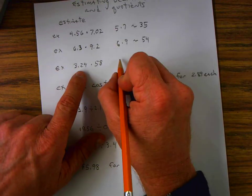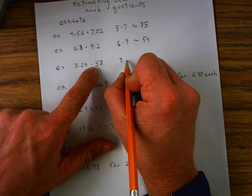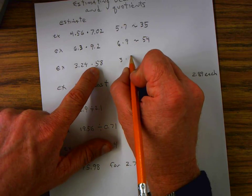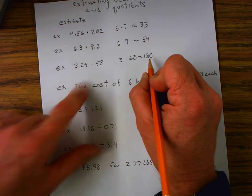In this case, 3.29 can be rounded to just 3, and times 58, that could be 60. 3 times 6 is 18, add a zero, approximately 180.